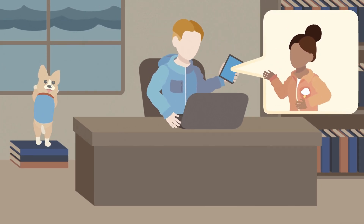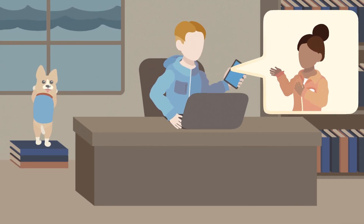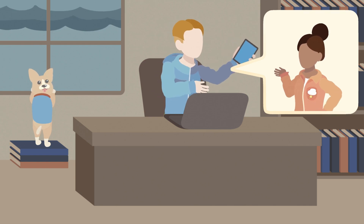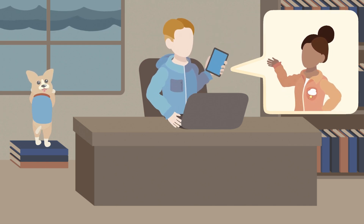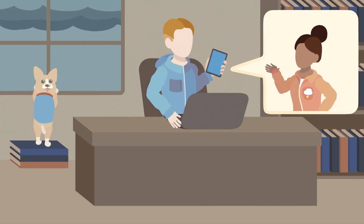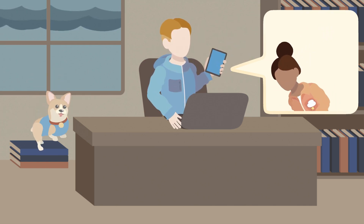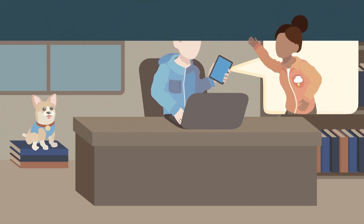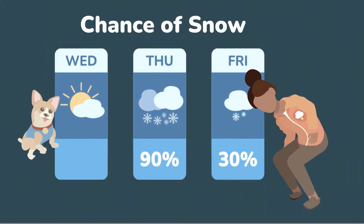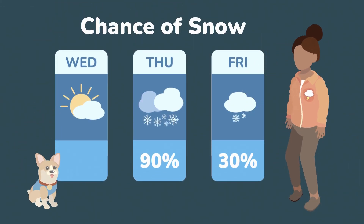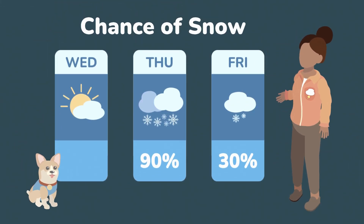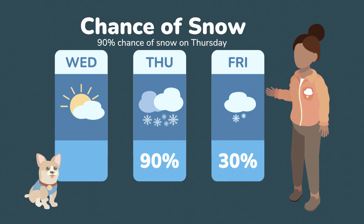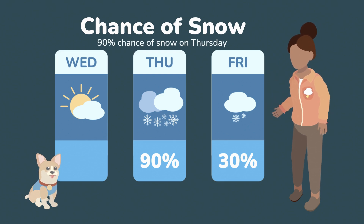Hi, I can help explain. I'm a meteorologist. Don't worry, I'm going to help answer your questions. You are already used to seeing probability in the forecast. For example, there's a 90% chance of snow on Thursday.